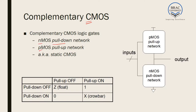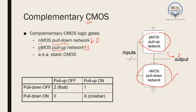The network of NMOS is called pull-down network and network of PMOS is called pull-up network. The pull-down network is a network which pulls the output down to logic zero or ground. The pull-up network is a network which pulls the output to a logic level of one. So the PMOS pull-up network makes the output one, and the NMOS pull-down network makes the output zero.